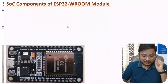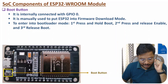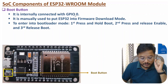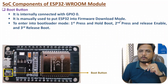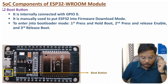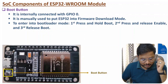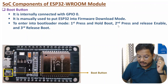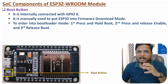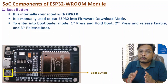Now let me discuss about the next SoC component, that is the boot button. It is internally connected with GPIO0 pin. This boot button is manually used to put the ESP32 into firmware download mode. To enter bootloader mode: first, press and hold the boot button; second, press and release the enable button; and finally, release the boot button. That is how one can enter bootloader mode to download firmware.